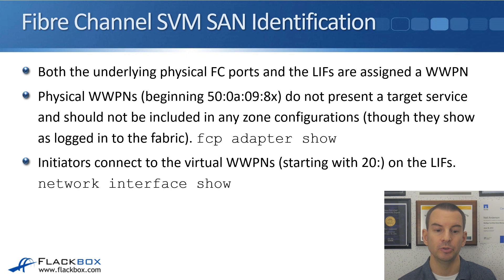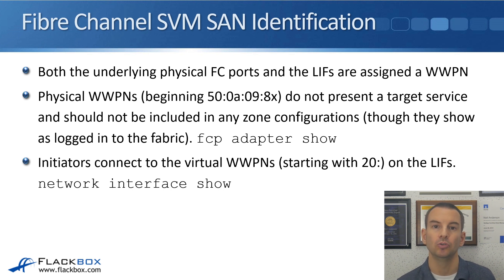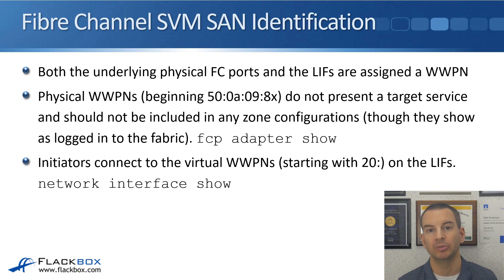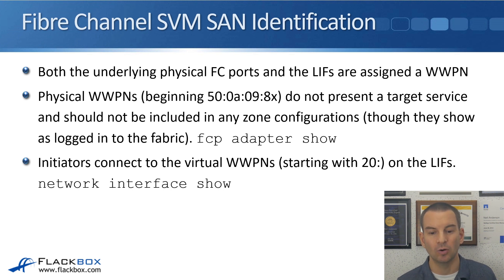We have a WWPN on the logical interface, and we also have WWPNs on the underlying physical ports. The physical port WWPNs begin with 50 — they do not present a target service, so clients cannot connect in on those WWPNs. Therefore they should not be included in any zone configurations on your switches, even though they will still show up as logged into the fabric. If you go on to your Fibre Channel switch and run the show command to see all WWPNs connected, you will see both the physical WWPNs beginning with 50 and the logical WWPNs on the LIFs beginning with 20.